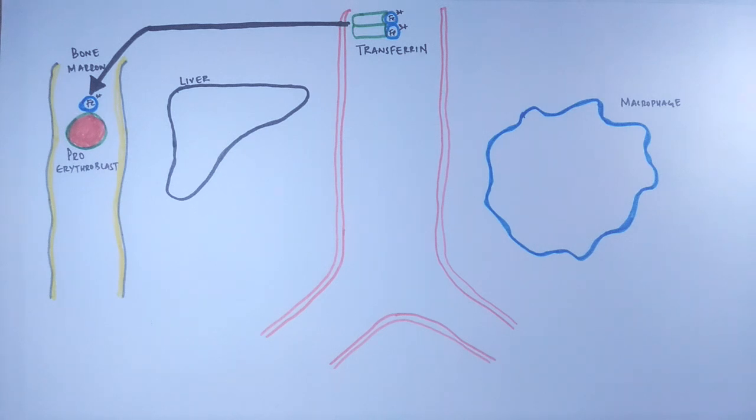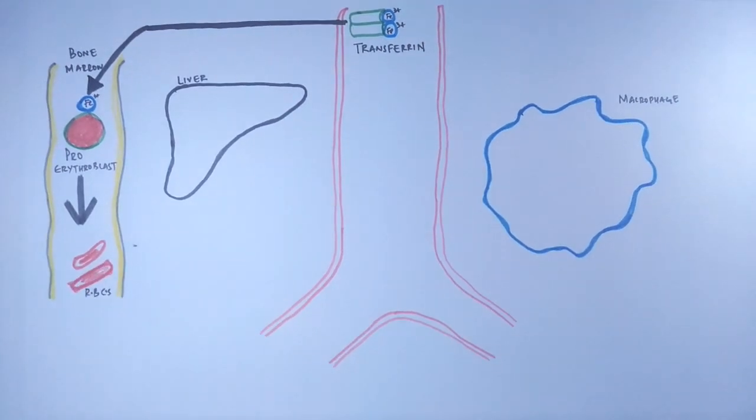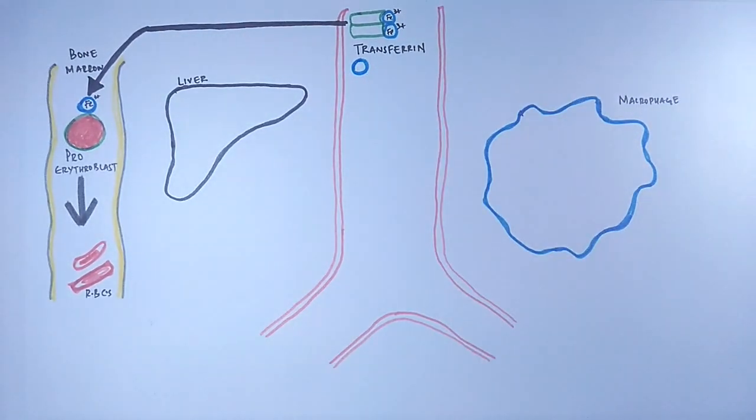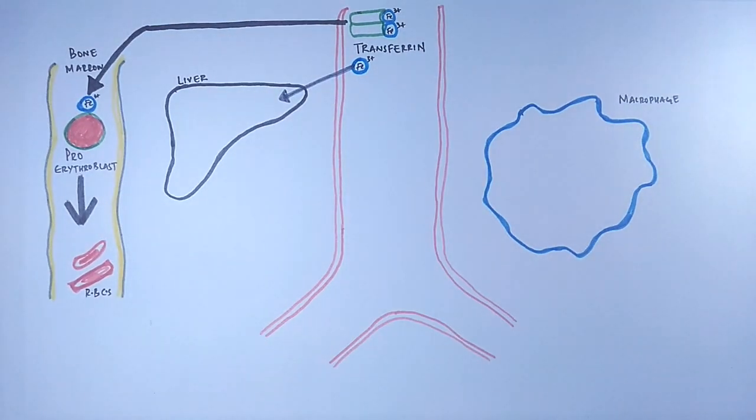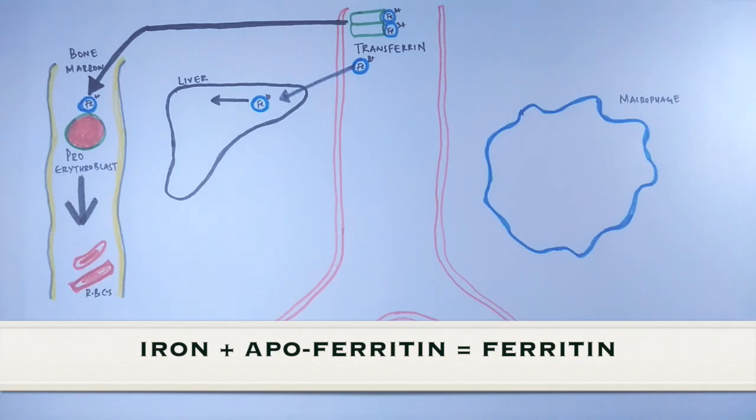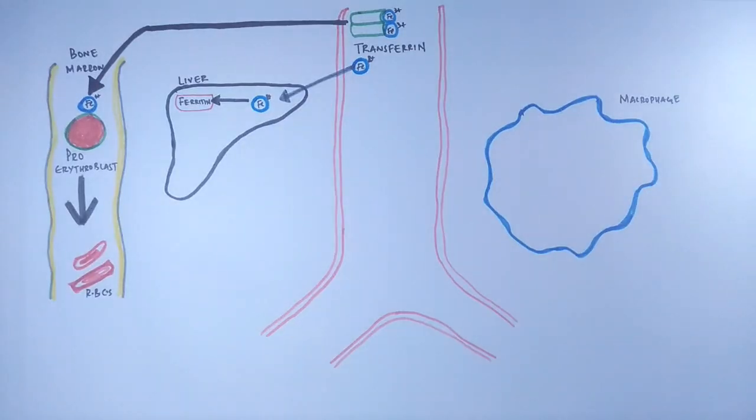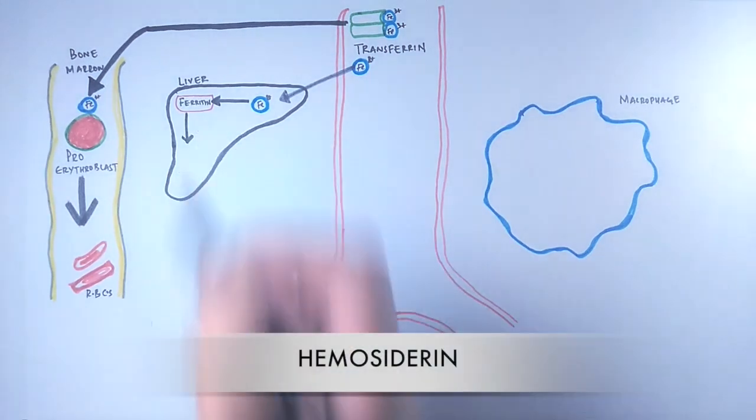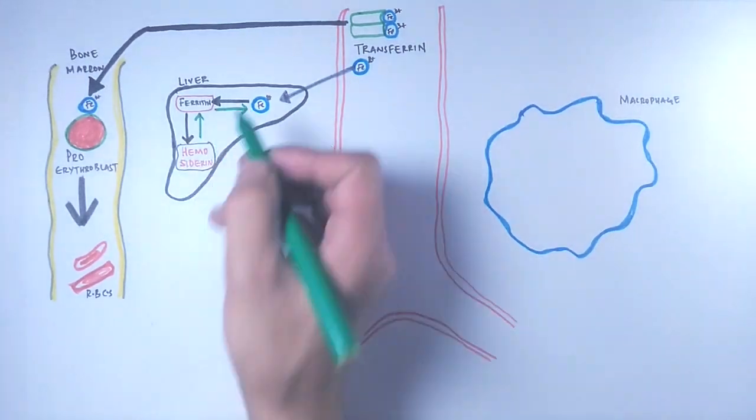Now let's get to the liver. The transferrin molecule also transports iron to the liver, where iron combines with apoferritin molecules to produce a complex called ferritin, which is iron in its non-toxic form. It can be stored here, and sometimes this is converted to hemosiderin as well. Both ferritin and hemosiderin act as iron stores in our body.